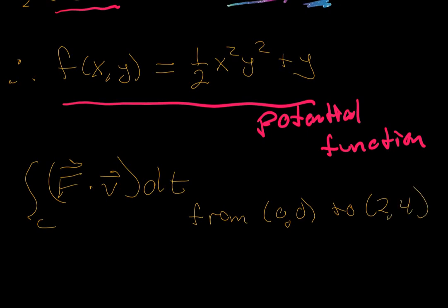Well, according to this fundamental theorem, we use our potential function right here. And that's going to be equal to ½x²y² plus y, evaluated from (0,0) to the point (2,4). Those are x and y coordinates. So let's do that evaluation.